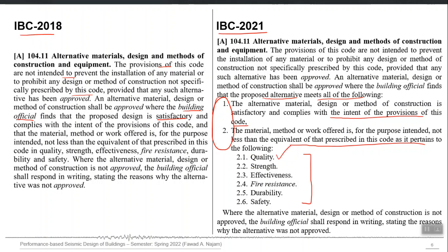The criteria may include quality requirements, strength, effectiveness, fire resistance, durability, and safety. Any alternative fulfilling these provisions can be approved. If we can show that performance-based design is actually achieving all the intentions of the building code — and in fact going beyond those intentions — then it can be a viable alternate methodology.